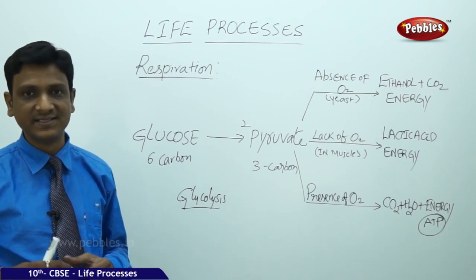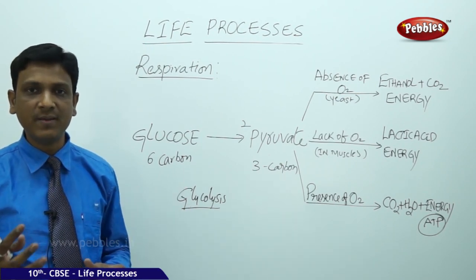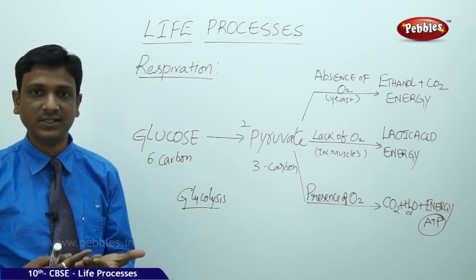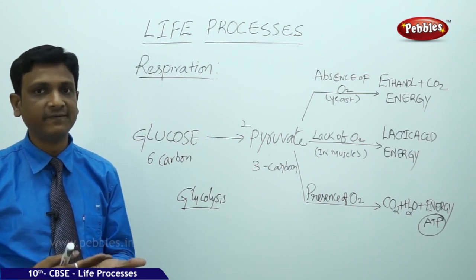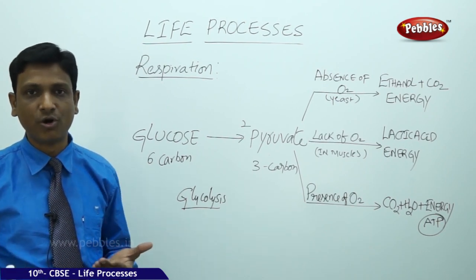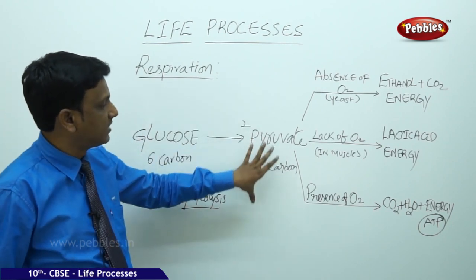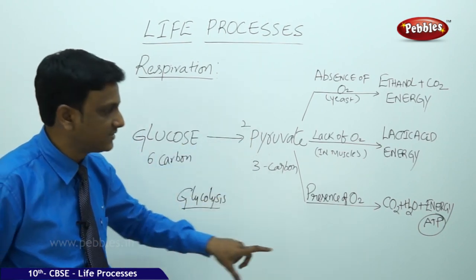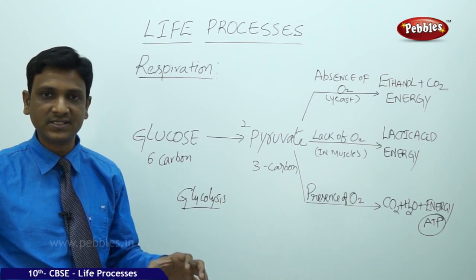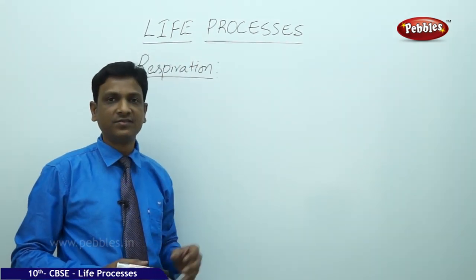ATP is called the cell currency, meaning ATP is required for all cellular activities. Just as you might hold a check or gold bar worth a large amount but still need cash to buy provisions in a shop, similarly the energy packed in glucose and pyruvate must be converted into ATP — the usable currency — for all reactions in the cell.